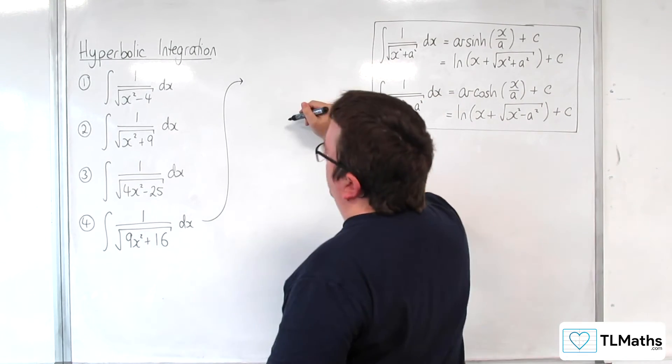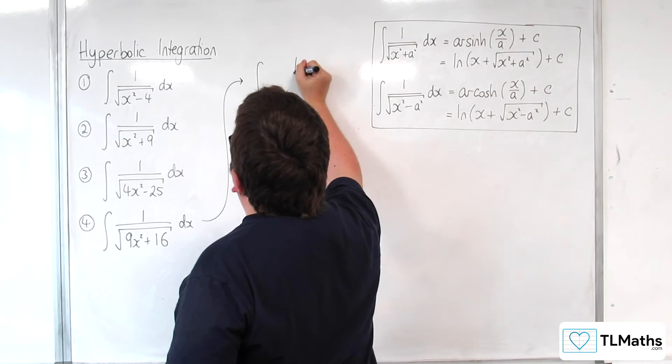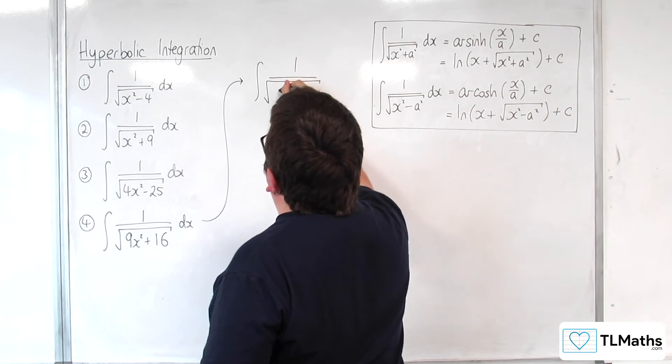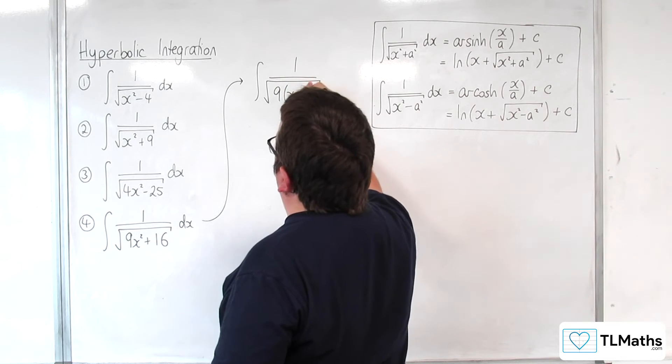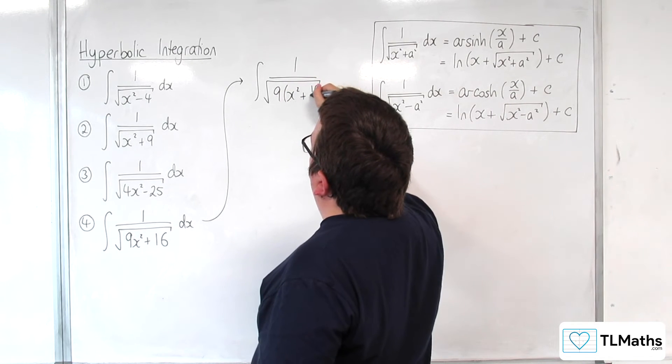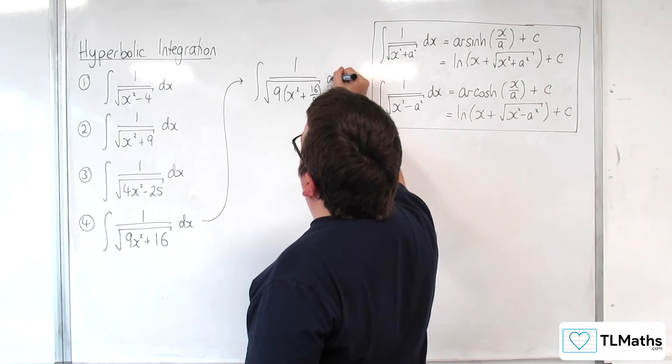So the first thing I'm going to do is factor the 9 out of the two terms inside the square root. So x squared plus 16 ninths, like that.